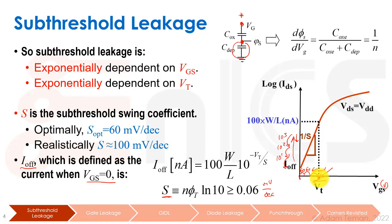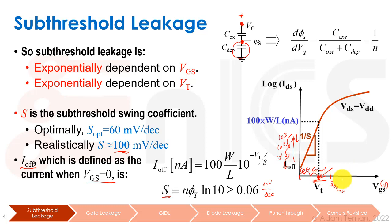Unfortunately, most planar transistors are closer to 100 mV per decade, so the minimum VT for a 10^3 ratio would actually be 300 mV. In practice we may want even higher ratios, and the actual threshold voltage — whether high-VT, low-VT, or standard — is provided with the PDK and designed separately for each technology.